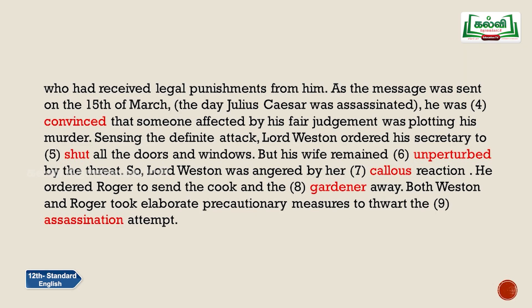As the message was sent on the 15th of March — the day Julius Caesar was assassinated — he was convinced that someone affected by his fair judgment was plotting his murder. He was certain that those who suffered because of his verdict had taken this opportunity for revenge, plotted his murder, and one of them had sent him this warning message: 'Remember Caesar — remember what happened to him.'